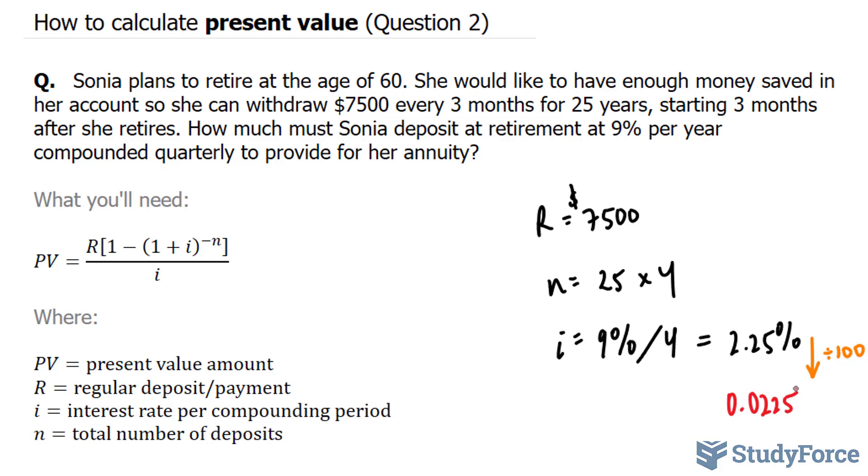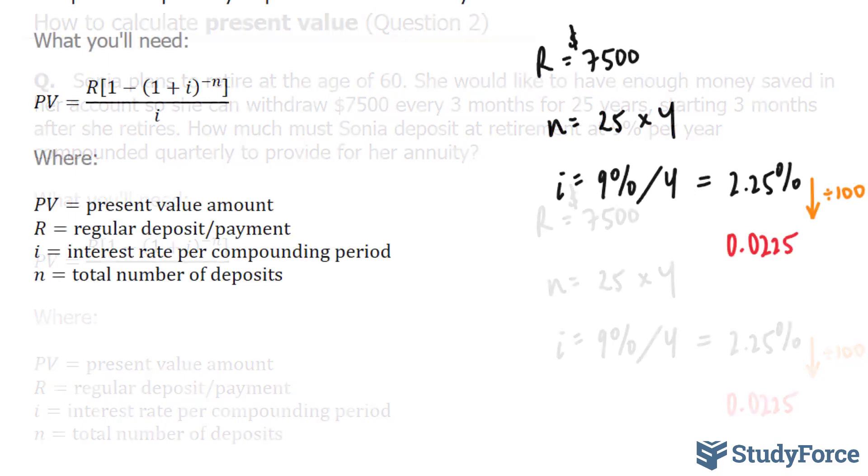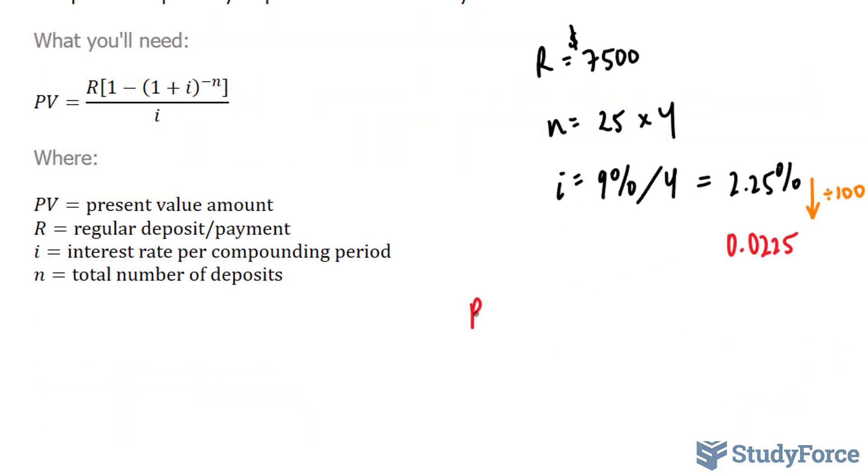What we're going to do next is plug in everything we know into this formula. So we have PV is equal to 7,500 bracket 1 minus 1 plus 0.0225 to the power of negative 100.